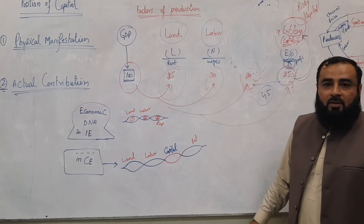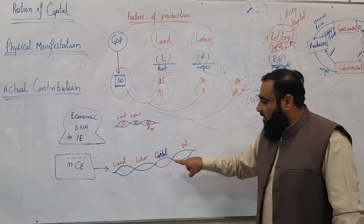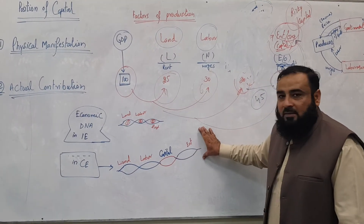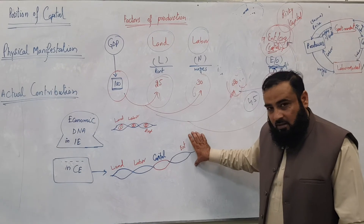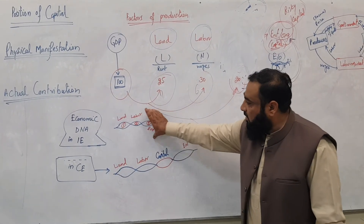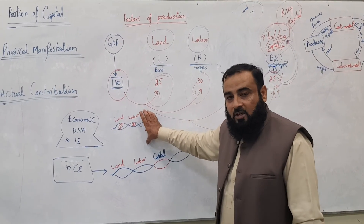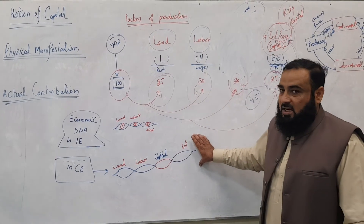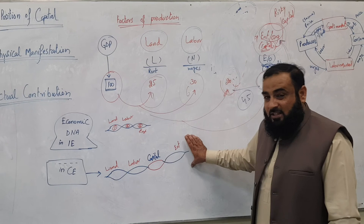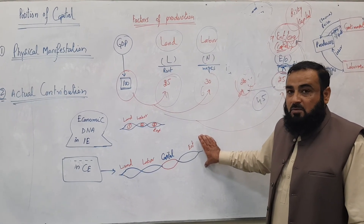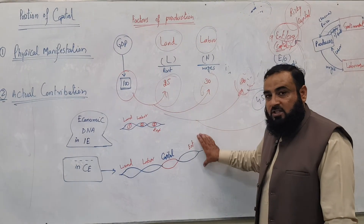Using a DNA analogy: the original economic DNA of a human being was modified by conventional economics — now capitalism has become a new entity, like a zombie rather than a human being. The Islamic economic system is where the success of humanity and mankind lies. Capitalism is nothing but exploitation of society — it is like a zombie that drains resources. That is why Muslim countries are not being developed under the umbrella of the conventional economic system.